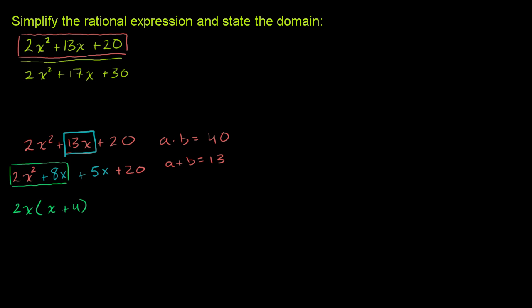And then let's factor out these two, or let's group these two characters. And if we factor out a 5, what do we get? We get plus 5 times x plus 4. 5x divided by 5 is x. 20 divided by 5 is 4. And we have an x plus 4 in both cases. So we can factor that out.